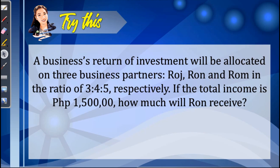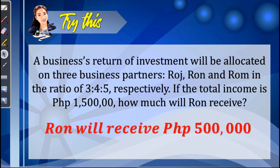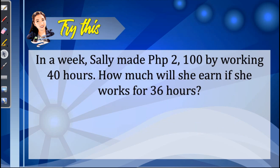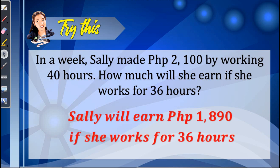After discussing the three types of proportion, it is now time to do practice exercises. Kindly pause the video so you could try to answer the items. Let's check your answers. Ron will receive $500,000. Did you get it right? If yes, great job. For the next item, Sally will earn $1,890 if she works for 36 hours.